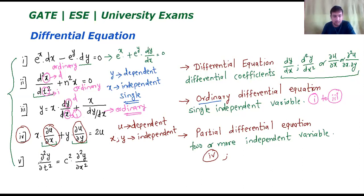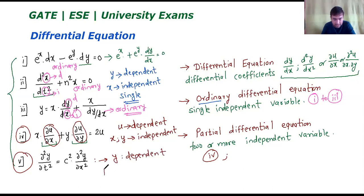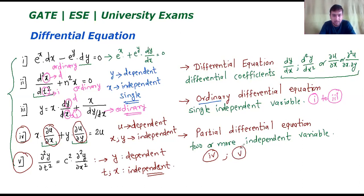Consider equation number 5: del squared u upon del t squared equals c squared times del squared y upon del x squared. In this equation, y is the dependent variable. It is dependent on t as well as x. Since there are two independent variables, this is also called a partial differential equation.